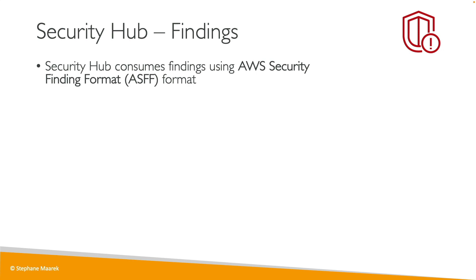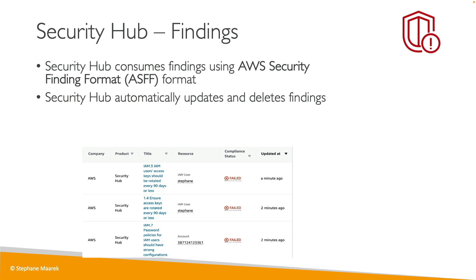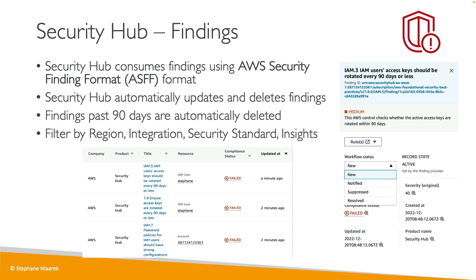Findings are always in the ASFF format — the AWS Security Finding Format. Security Hub automatically deletes and updates them. For example, findings might indicate that an IAM user access key hasn't been rotated in 90 days, or that a password policy isn't strong enough. You can click on a finding to see its workflow, mark it as new, notified, suppressed, or resolved, and update it over time. If not dealt with, findings are automatically deleted after 90 days. In the console, you can filter by region, integration, security standards, and insights.